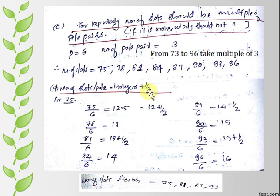Check fourth condition: find slot per pole of these numbers by dividing these by six. Then choose from these the numbers that can be written as integer plus half. We finally got four numbers: 75, 81, 87, 93.